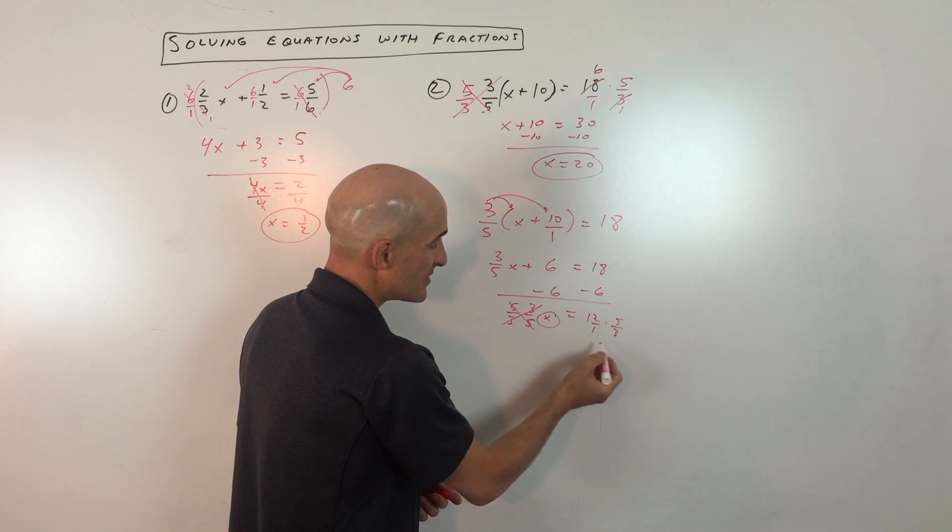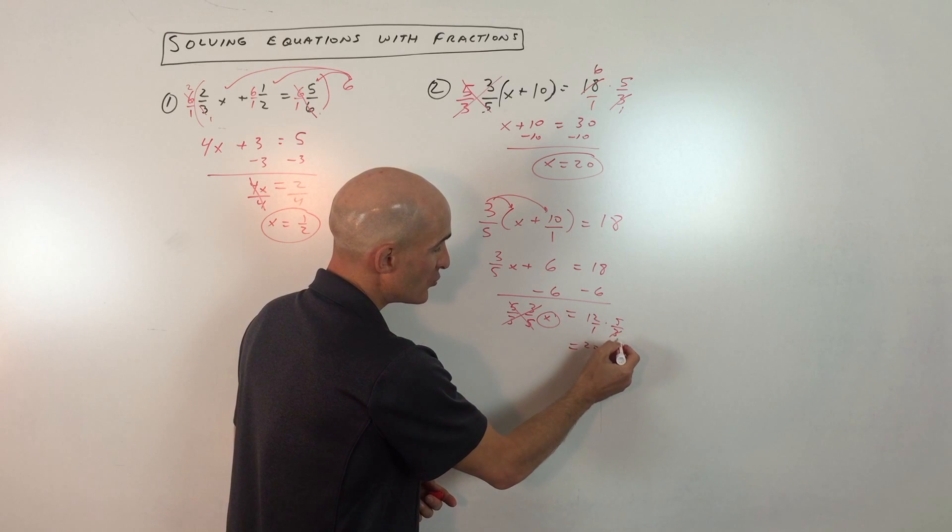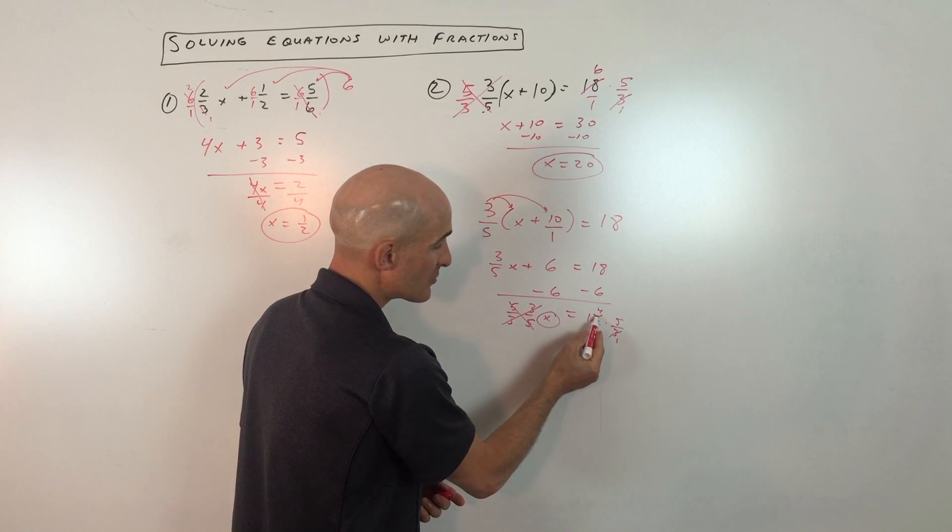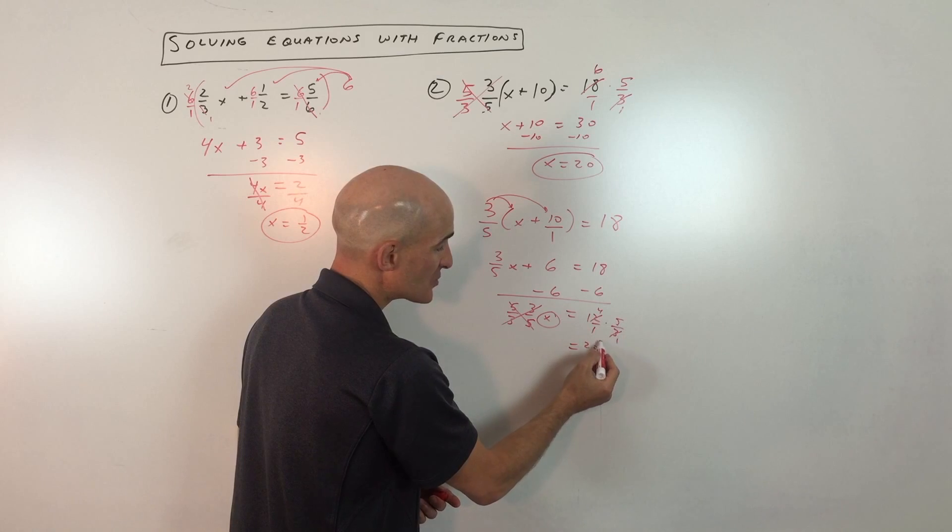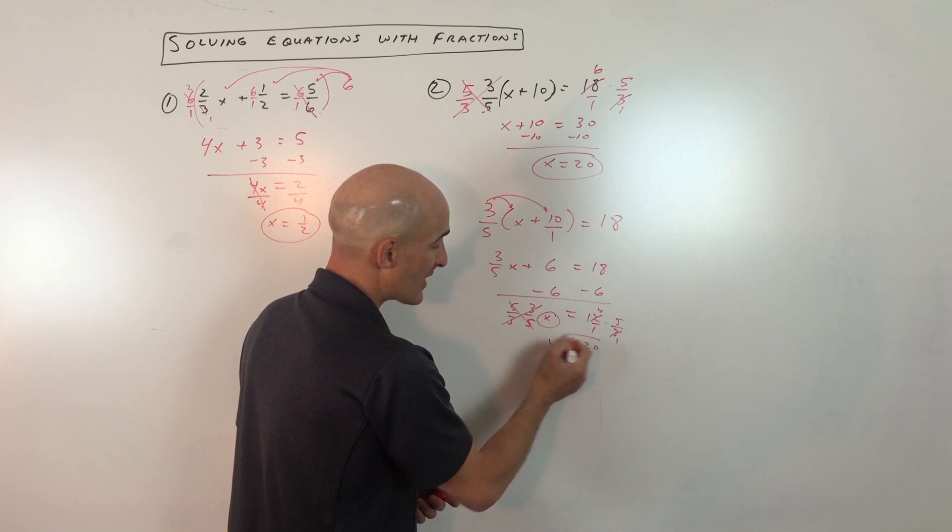And you can see here this is 60 divided by 3, which is 20. Or you can do the cross-reducing technique. 3 goes in here once. 3 goes in here 4 times. 4 times 5 is 20 over 1. And so you've got x equals 20. So either way, you're going to get the same result.